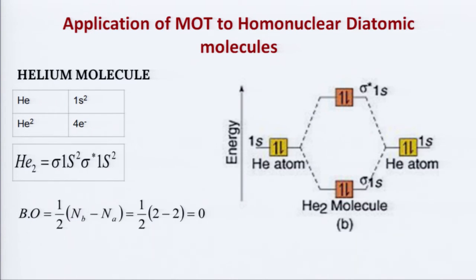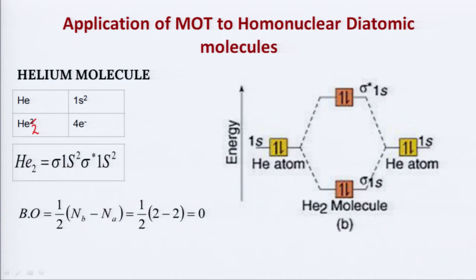Now let us have a look at the next molecule — helium — also very important from exam point of view. Helium atom has two electrons. When the helium molecule is formed, it has four electrons. These four electrons, when distributed in the MOs, give sigma 1s two electrons and sigma star 1s also two electrons. Calculating its bond order: number of bonding electrons are two, number of antibonding electrons are also two, so bond order is (2 minus 2) divided by 2, which equals zero.